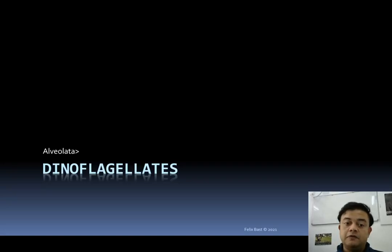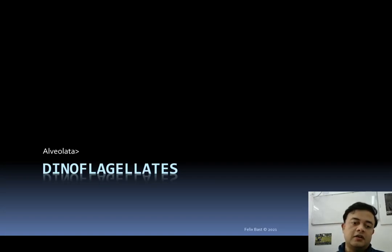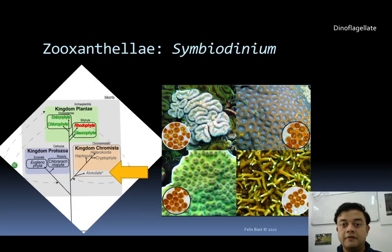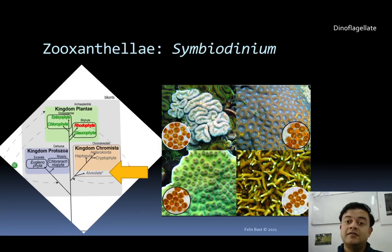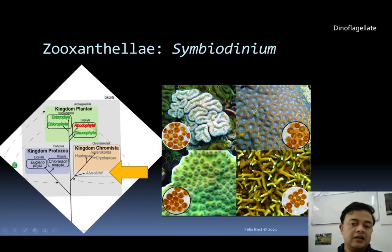Dinoflagellates belong to Alveolata, and as the name suggests, they have two flagella — that is why they are called dinoflagellates. They also belong to the Biconta. Zooxanthellae of the coral reef is basically the genus Symbiodinium, which is present in any kind of coral reef — soft coral or hard coral.